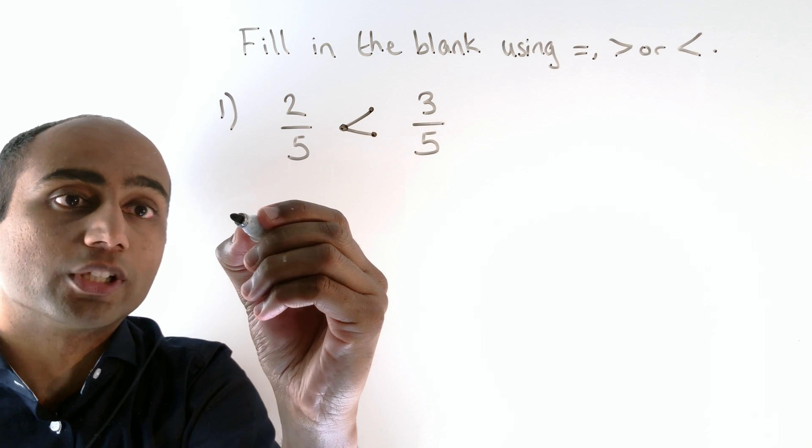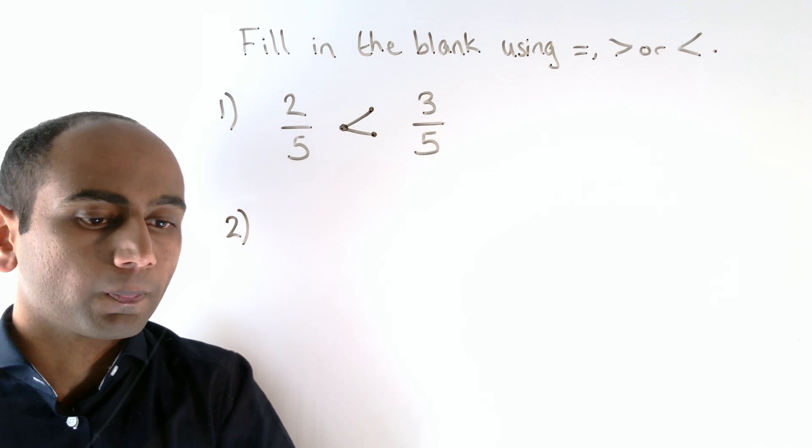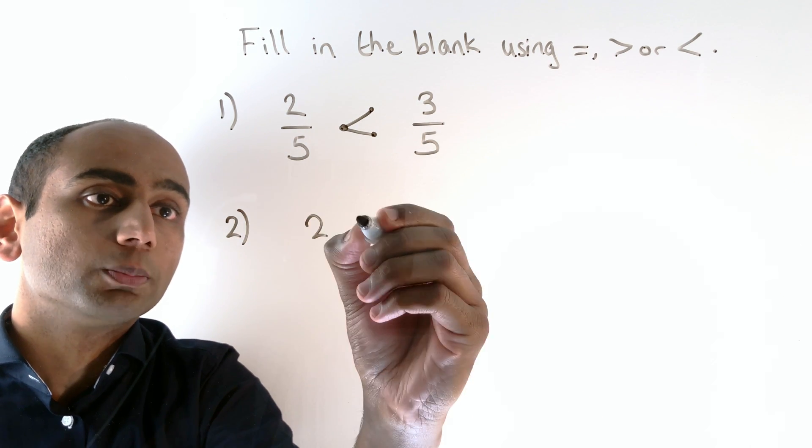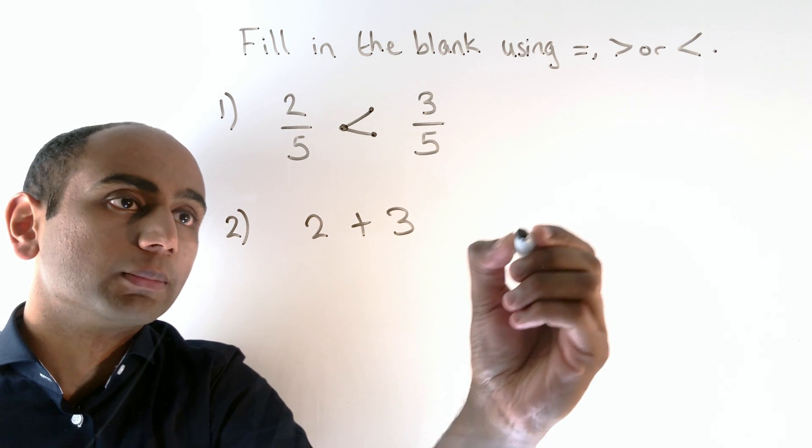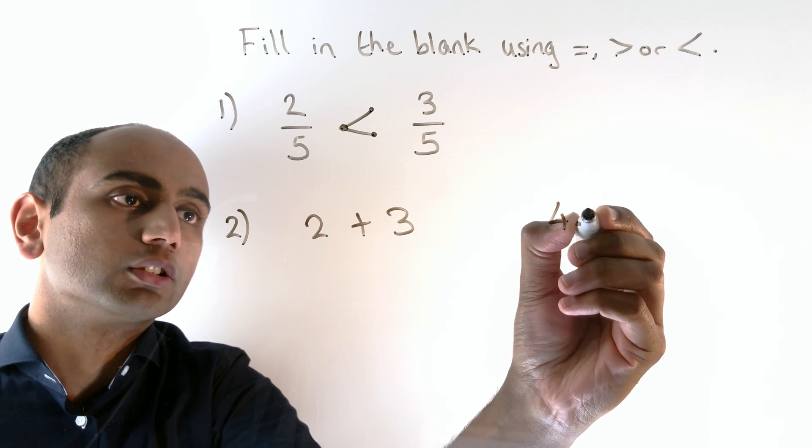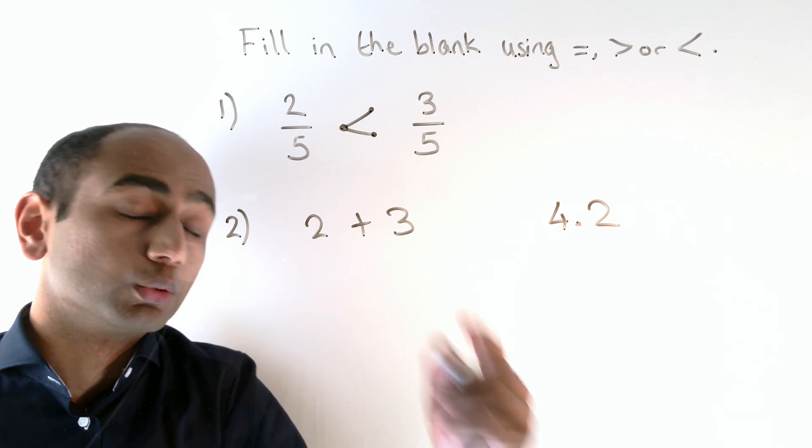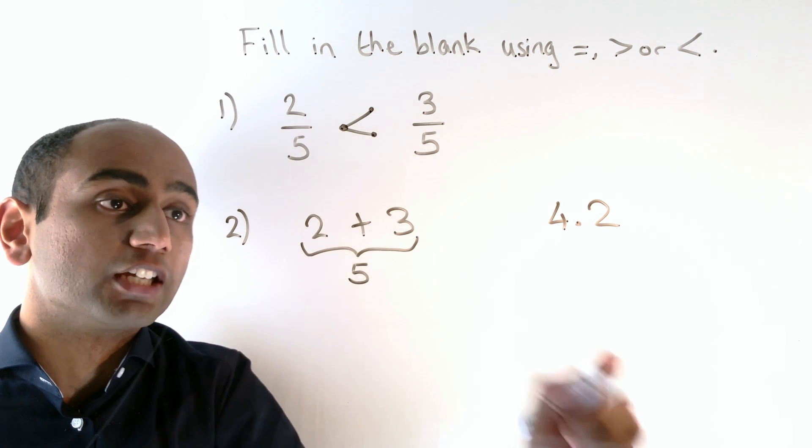Let's compare that with question two. Here we've got 2 plus 3, and we're comparing that with 4.2. Now 2 plus 3 is 5.